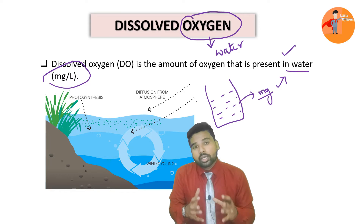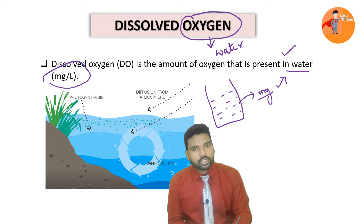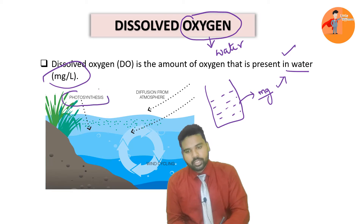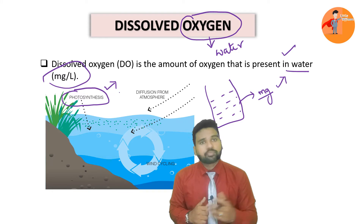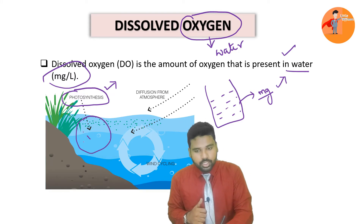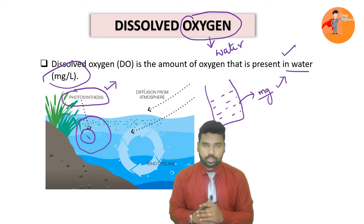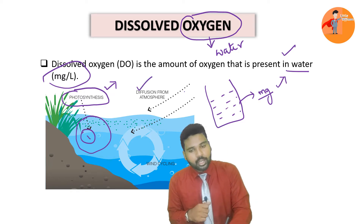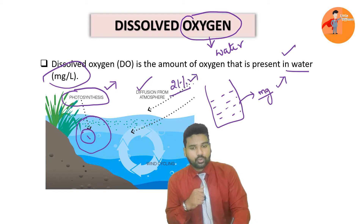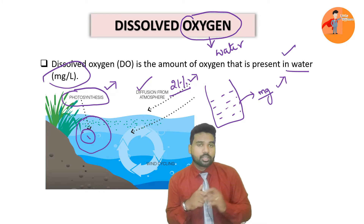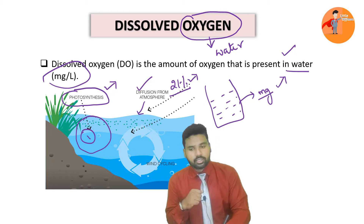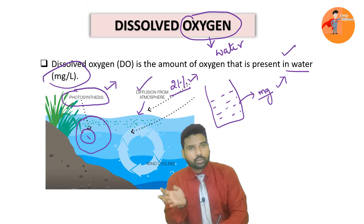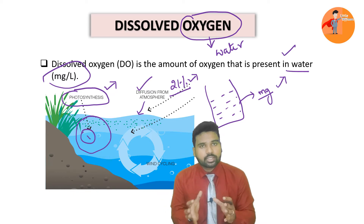Now the question is how does this oxygen get dissolved in the water? What are the various sources? The answer is very simple. The first source is photosynthesis. When photosynthesis happens, there is absorption of carbon dioxide and releasing of oxygen, and that oxygen gets dissolved in the water. The second source is diffusion from the atmosphere — we know that close to 21% of the atmosphere is oxygen, so there is dissolution of oxygen into the water. Apart from that, wind cycles and whatever aquatic plants are doing through photosynthesis also contribute to oxygen dissolving in the water.